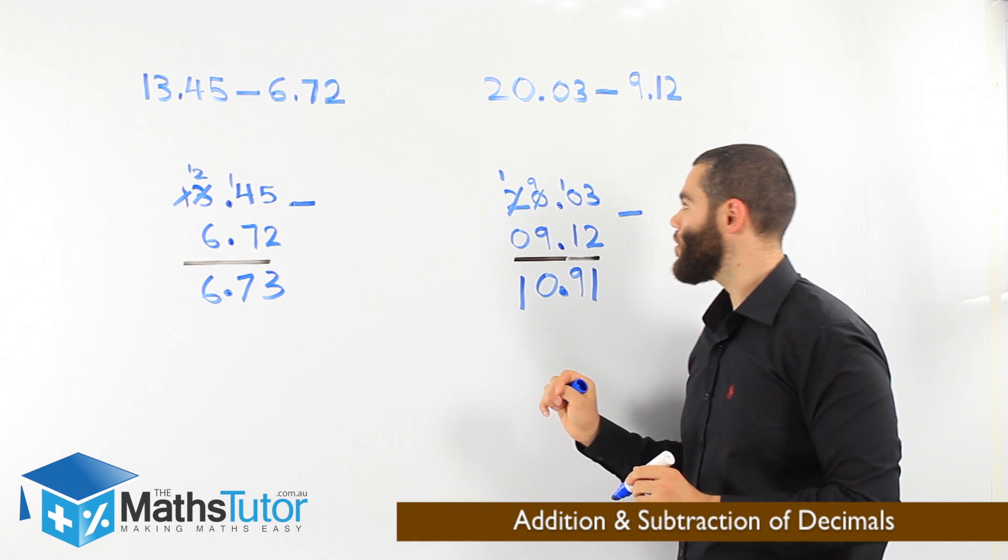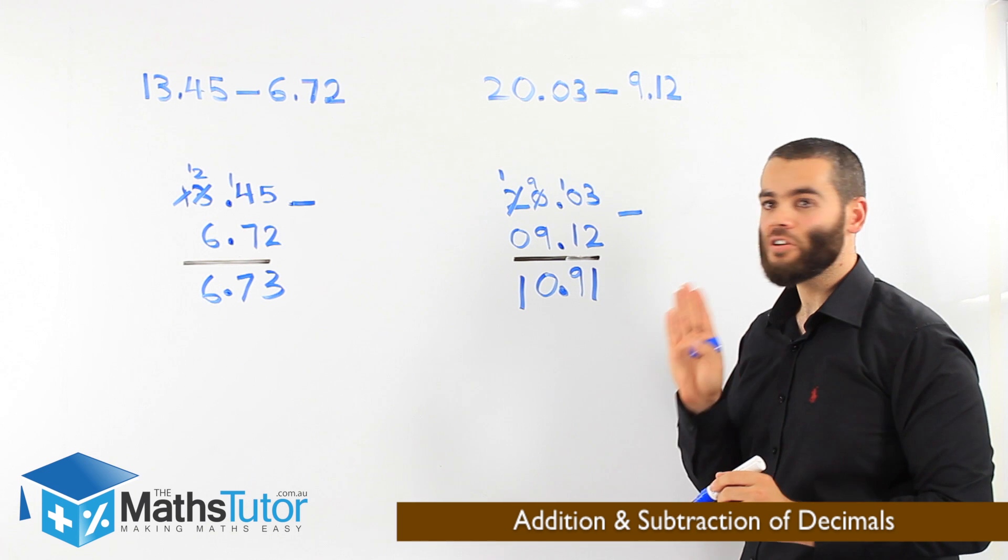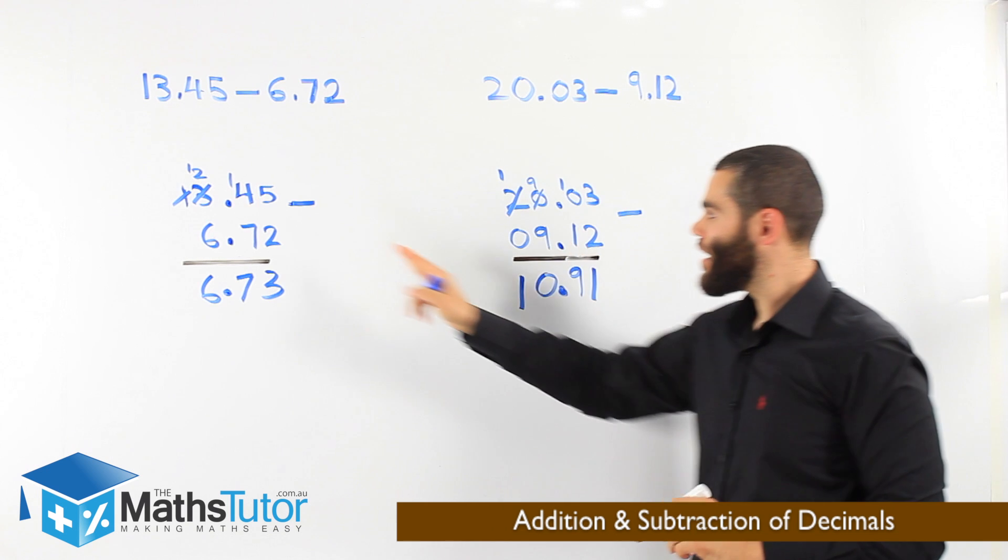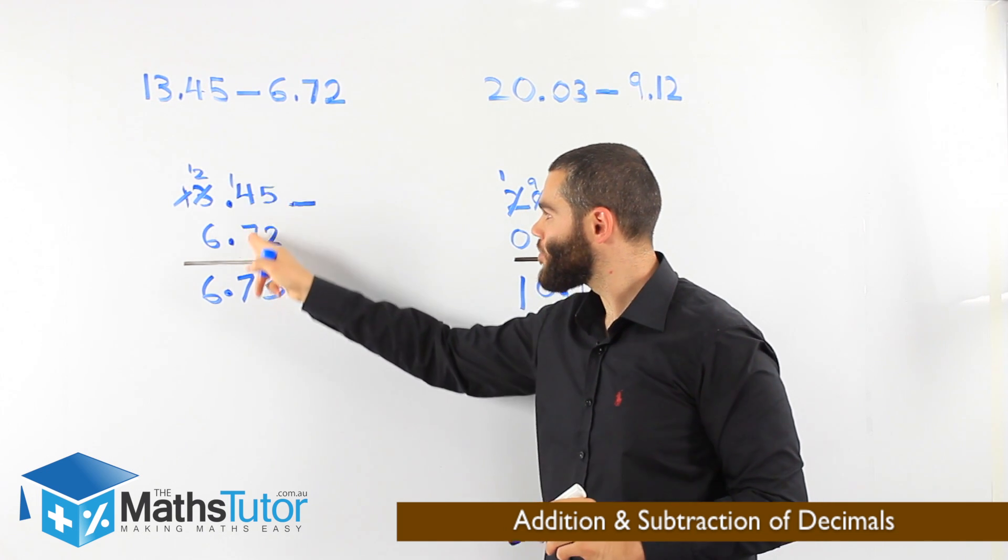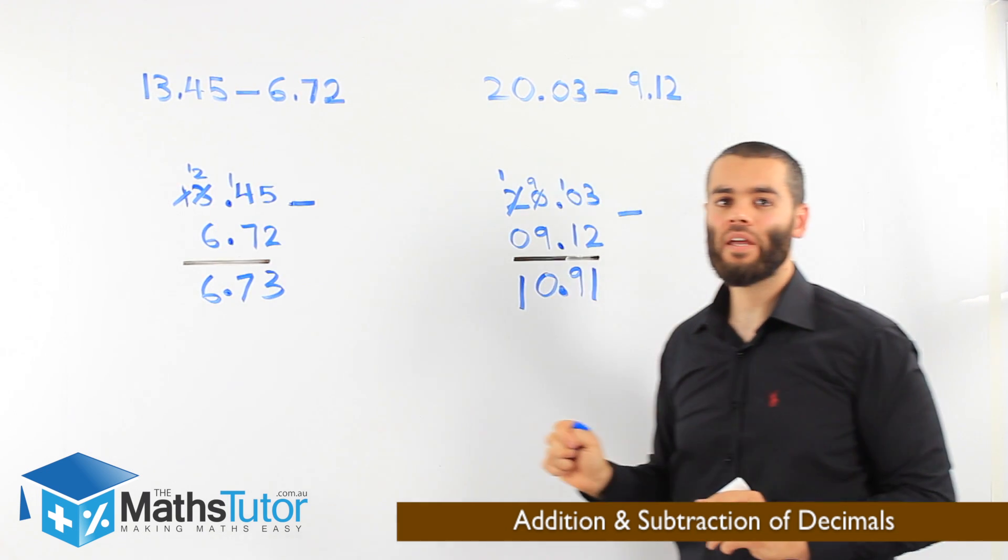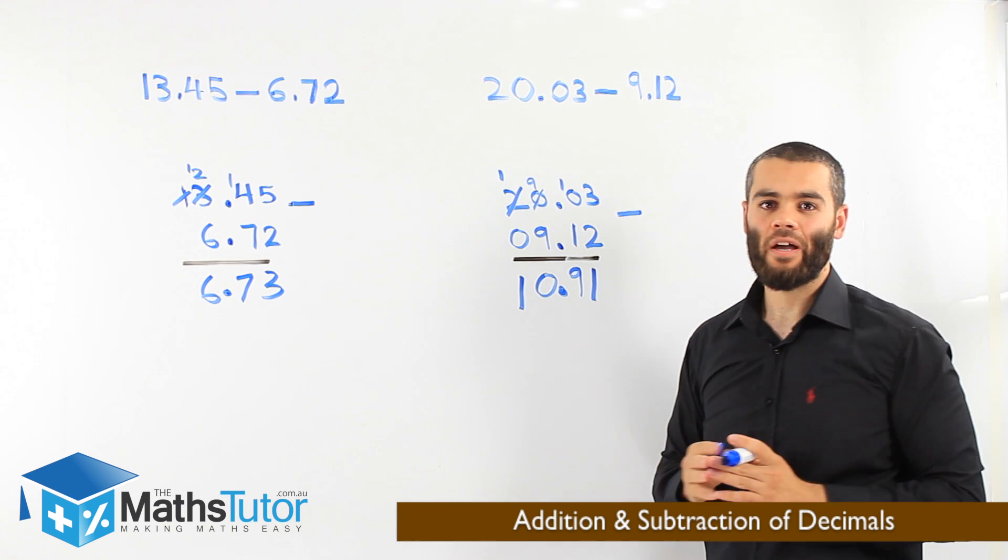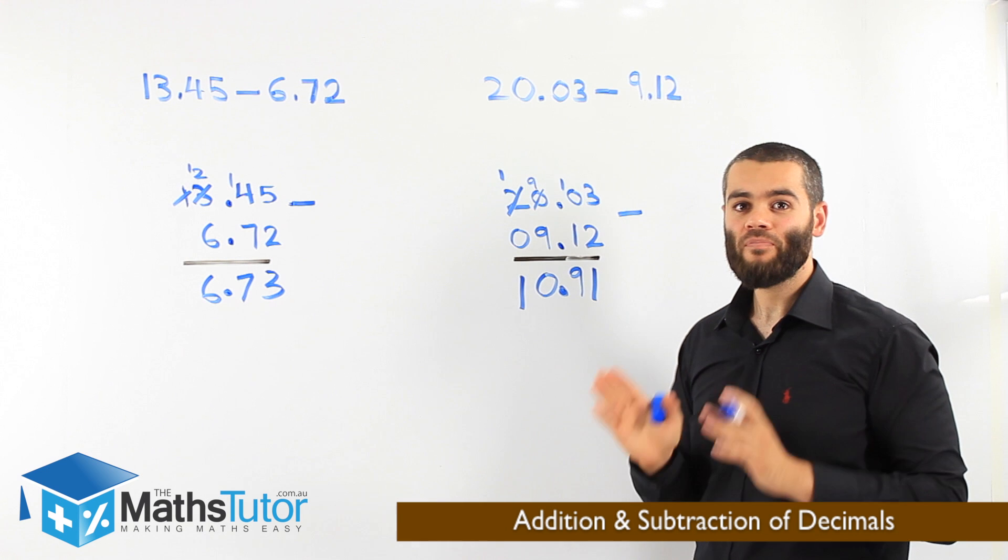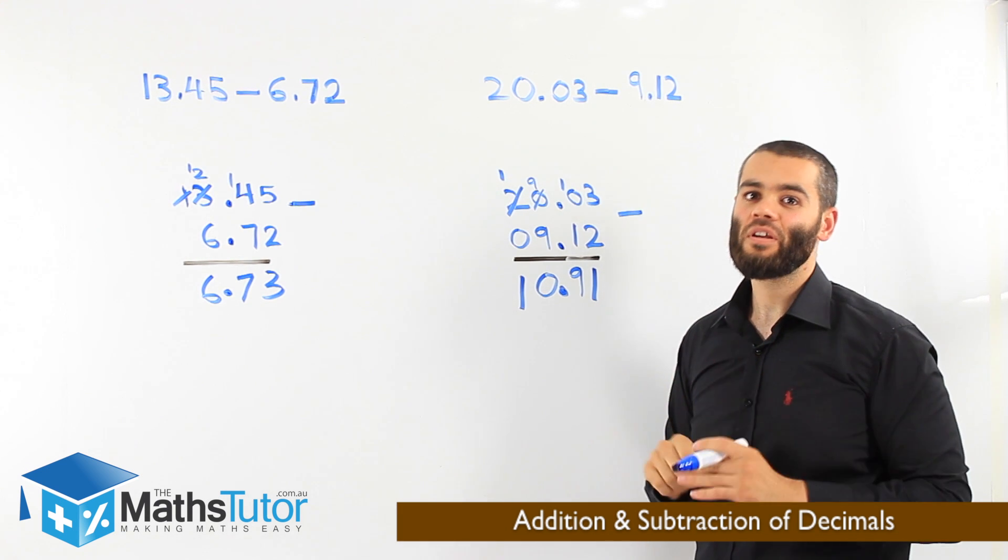So, the subtraction is our normal subtraction, but it's critical that we have our points aligned. So, here, once the points are aligned, all the numbers fall into place and we can work out our subtraction and also our addition. As simple as that. Very easy. Always remember, point under point, you'll never get wrong.